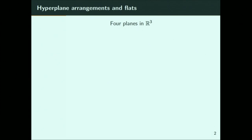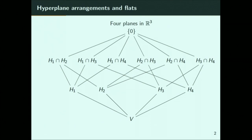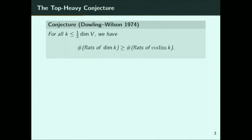Let's look at a bigger example. I'll take four generic planes inside R3. Here's the lattice of flats: I have the vector space, four planes, and if I intersect any two of the planes I get a line — so there are six lines. If I intersect three planes, I get the zero vector. Ordered by reverse inclusion, the codimensions are 0, 1, 2, 3. The top-heavy conjecture here basically says that six is bigger than four. This conjecture was made by Dowling and Wilson in 1974 and proven 43 years later by Jun He and Bo Tsong Wang in 2017.